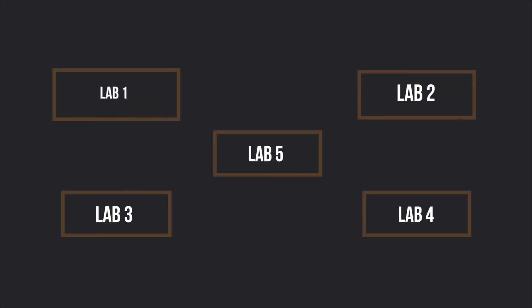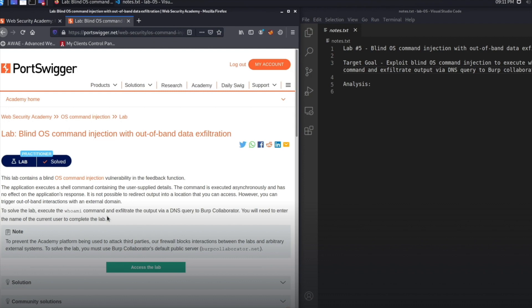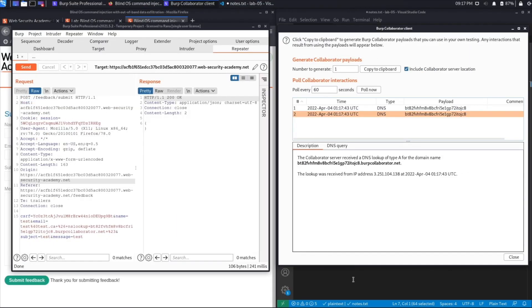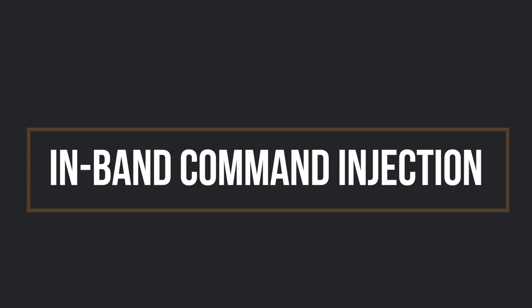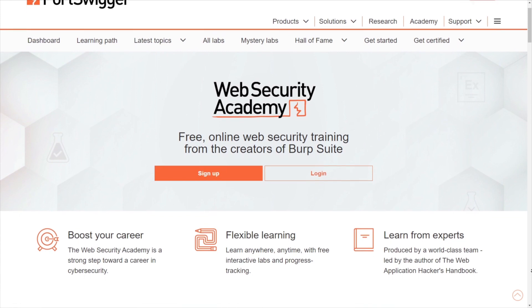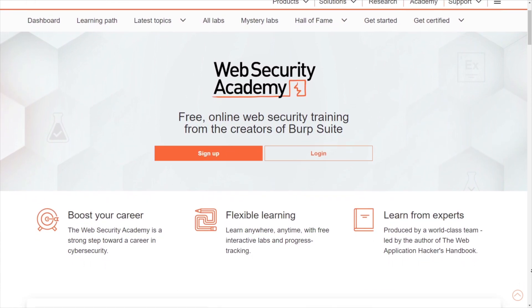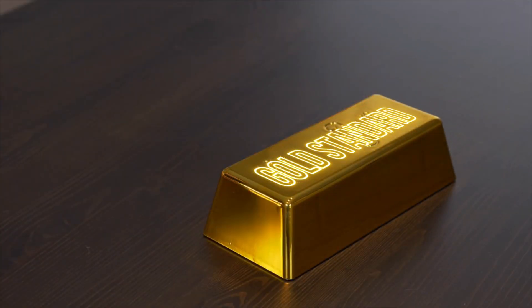We'll also go over prevention and mitigation techniques on how to defend your applications against this type of vulnerability. For the lab component, we have five hands-on labs where you'll get a chance to exploit command injection vulnerabilities of varying difficulty levels. We'll start off with a simple case called In-Band Command Injection, where you see the output of your payload in the response of the request, and then move on to more difficult vulnerabilities like Blind Command Injection. With each lab, we'll first teach you how to exploit the vulnerability manually, and then we'll script it in Python. The labs are created by the PortSwigger organization as part of the Web Security Academy, which in my opinion is the gold standard when it comes to learning about web security.